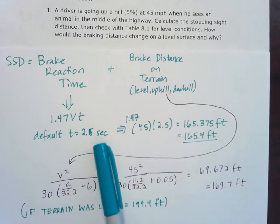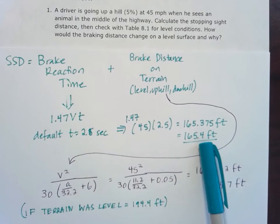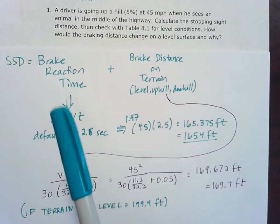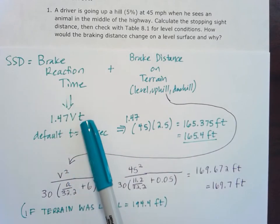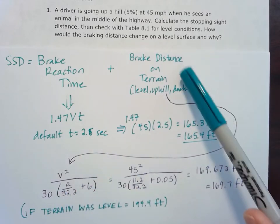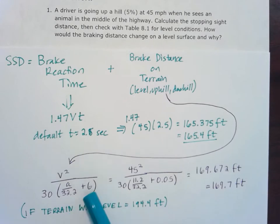So remember that first component, that's going to be the same whether you're level, uphill, or downhill, because it's only including the speed and that reaction time, which we use as a default 2.5 seconds. It's the second component, that brake distance on terrain, where we have to take into account that grade. And so that changes things here. We can see that it's a lot smaller with that uphill grade, which makes sense.